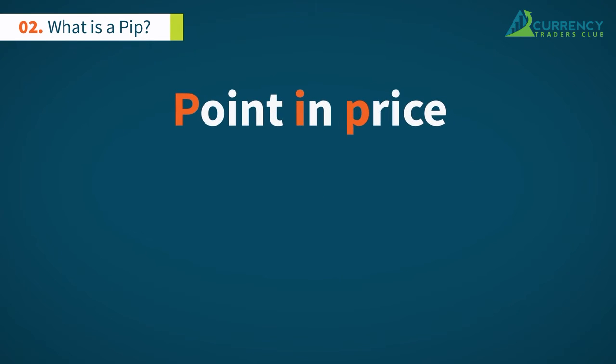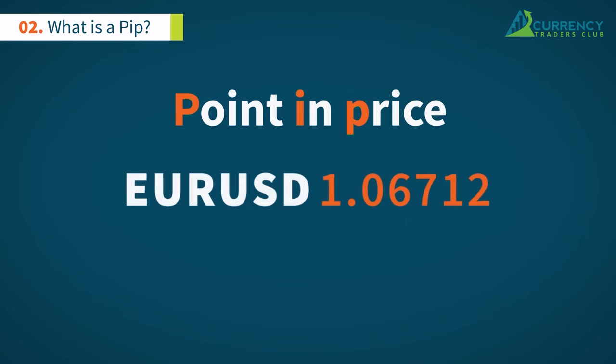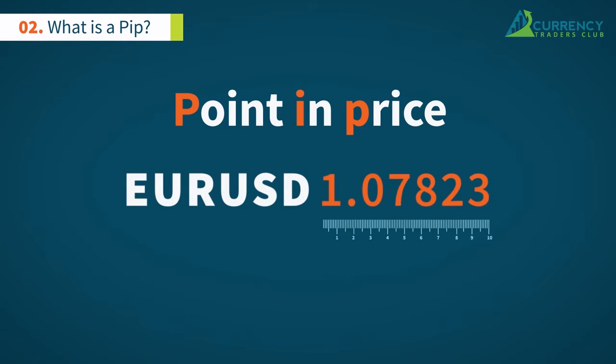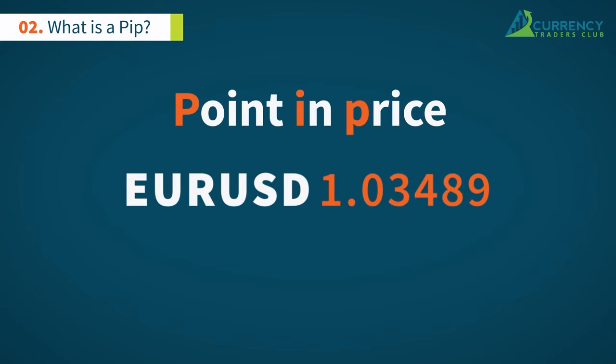A point in price, or PIP for short, is a measure of the change in the exchange rate of a currency pair. It is the smallest unit of measurement we use when trading currencies.